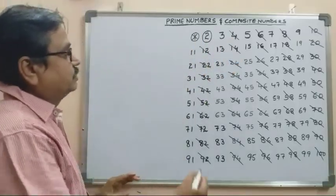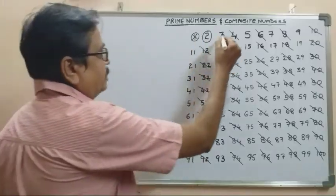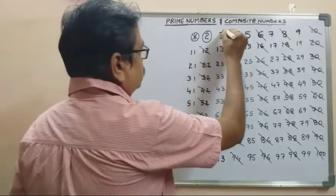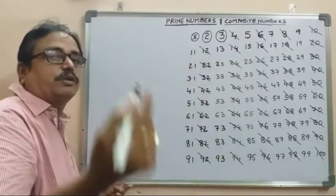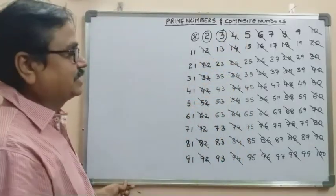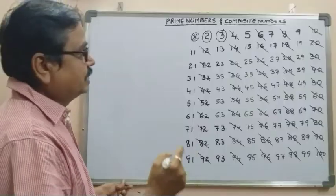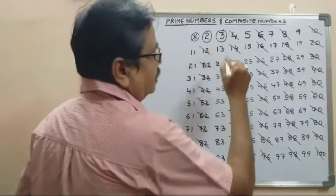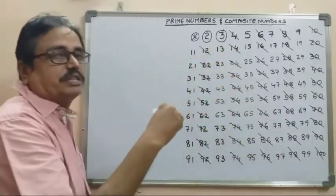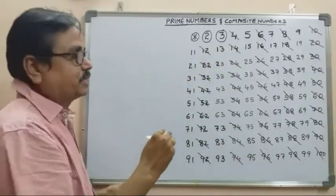Next is 3. We have 3 as a prime number and now we mark its multiples in the table.